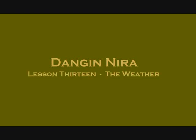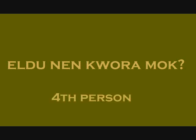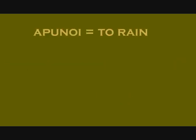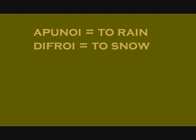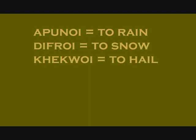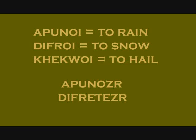Lesson thirteen: the weather. One common aspect of conversation is discussion of the weather. To ask how the weather is, you say 'how is the weather.' There are a variety of ways to respond, and many of them use the fourth person. There are three verbs of precipitation to describe a current, past, or permanent weather condition — you'd conjugate one in the fourth person. For example, it's raining; diffretezer would be it's snowed; keckuhuzer would be it hails all the time.